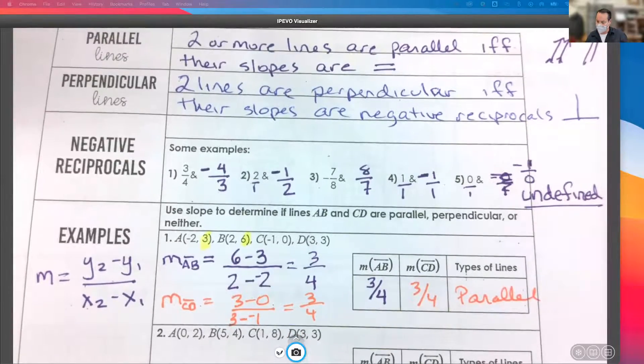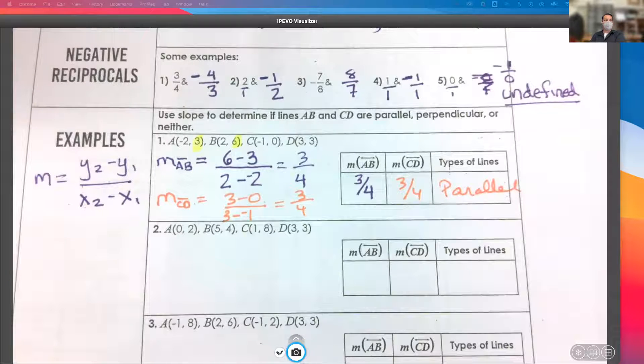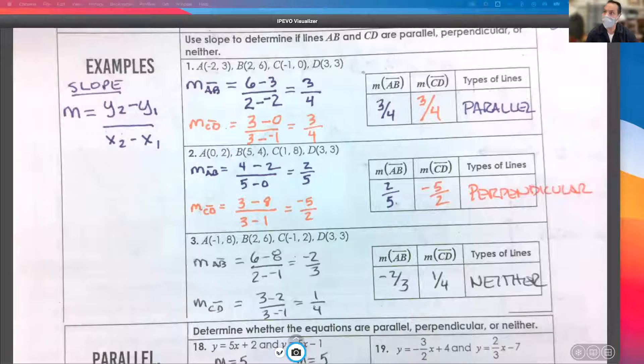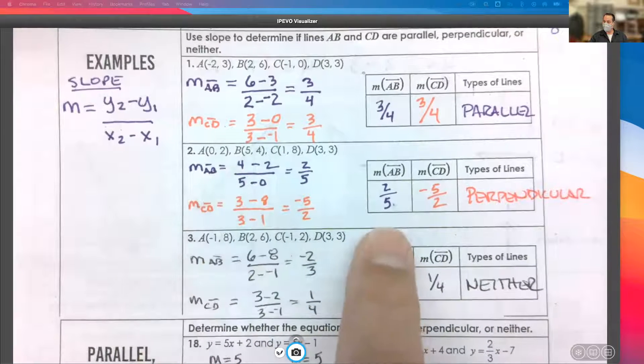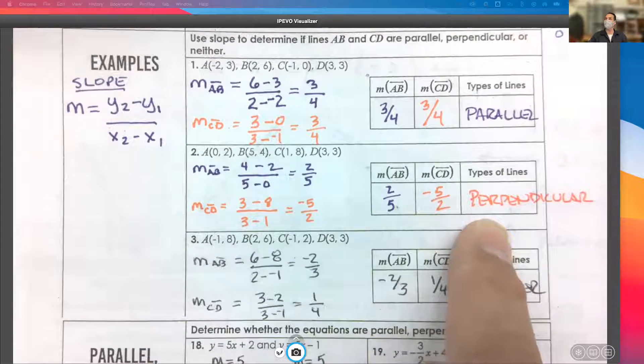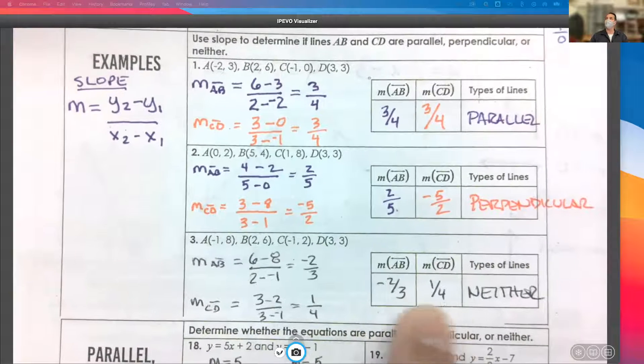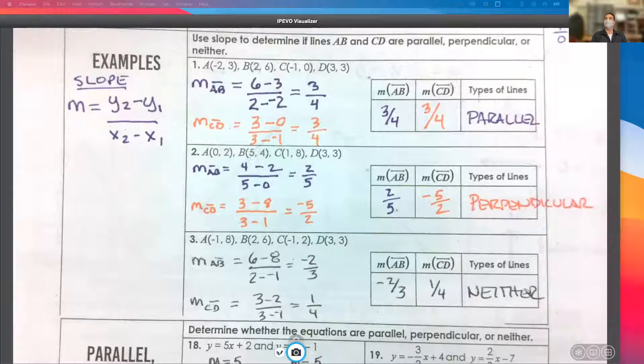Would you guys please do number 2? And if you have time, number 3. Calculate the slope of the two lines, compare them, and see if they're parallel or perpendicular. Or neither. All right. Please take a look up on the board here. See how you did. And number 2, AB has a slope of 2 fifths. CD has a slope of negative 5 halves. Those are negative reciprocals. Therefore, these lines are perpendicular. If you had a chance to get to 3, it's negative 2 thirds, 1 fourth. Those don't match up, and they're not negative reciprocals, so you'd say neither. Any questions on finding the slope between two points? Determining whether two lines are parallel based on their slopes?